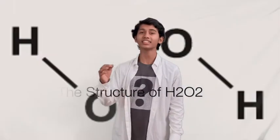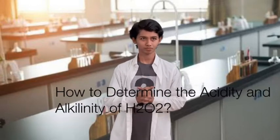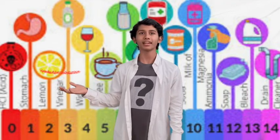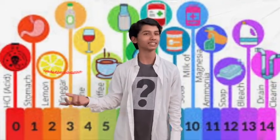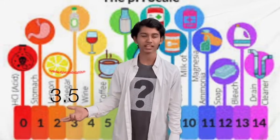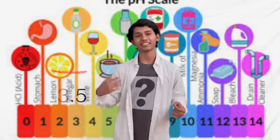As we see in its chemical formula, two molecules of hydrogen and two molecules of oxygen combine with each other to form hydrogen peroxide. But how do we determine its acidity or alkalinity? In chemistry, we have a pH scale to measure whether a compound or element is acidic or basic. H2O2's pH is approximately 3.5, so basically it's acidic in nature.